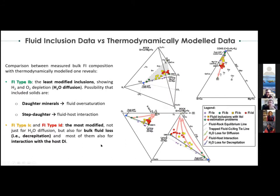Comparing the modeled fluid composition with the measured one, we can see that Type 1B fluid inclusions are the least modified, as they are closest to the modeled fluid. Their discrepancy from the modeled fluid is mostly due to water loss, most probably by diffusion. Probably only one of the two inclusions experienced minor chemical interaction with the host diopside, so we cannot rule out that the talc and calcite in Type 1B fluid inclusions may be true daughter minerals. Type 1C and 1D fluid inclusions show extreme interaction with the host diopside and even more extreme water loss, most probably by decrepitation.